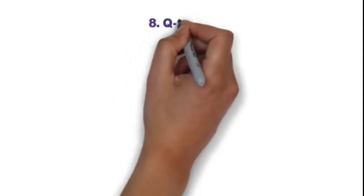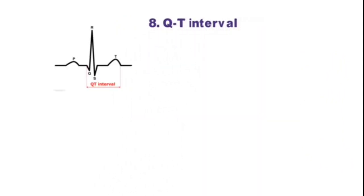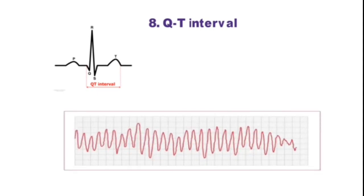Step 8 is QT interval, from start of Q wave to the end of T wave. As a rule of thumb, normal QT interval is less than half the preceding RR interval. An abnormally prolonged QT interval is associated with increased risk of ventricular arrhythmias, especially torsades de pointes.